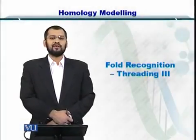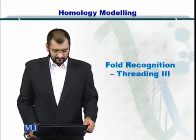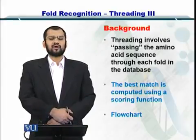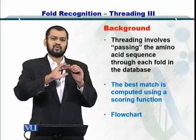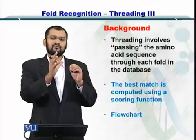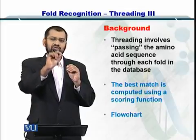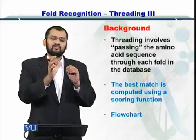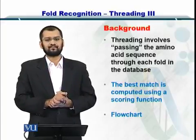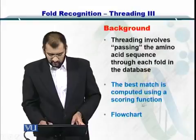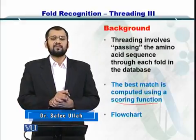Now we will see how threading or fold recognition works in the form of a flowchart. Before we do that, let's take an overview of what fold recognition and threading was. It simply involved passing the sequence — the amino acid sequence — over a structure. This structure is a fold from the fold library, such as SCOP. By passing the sequence onto the fold, you find the fold which best matches the sequence. You then give it a score using a scoring function, which is typically a z-score function.